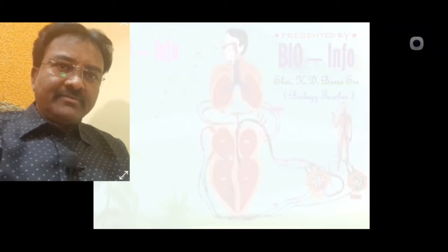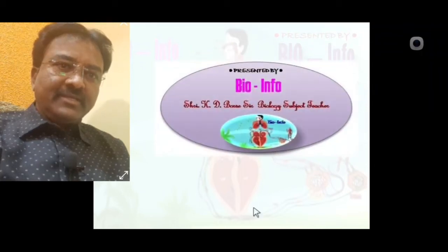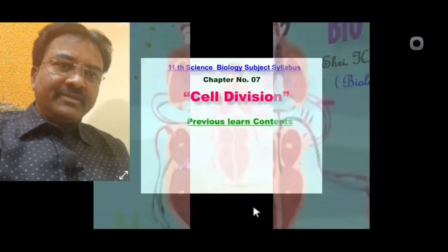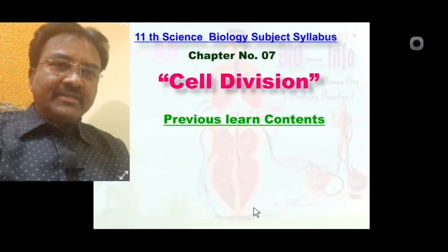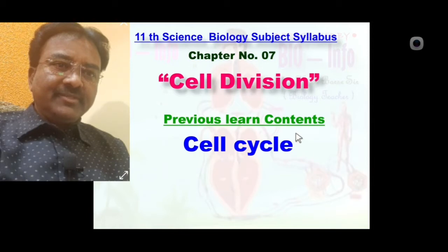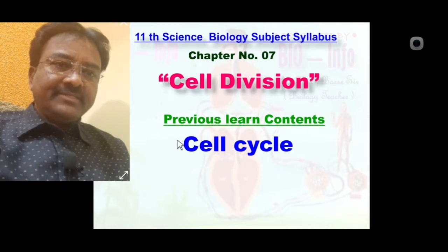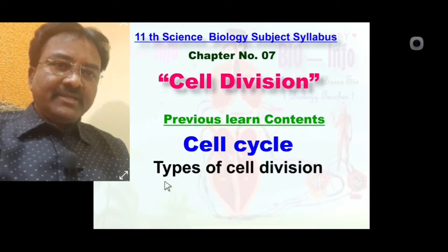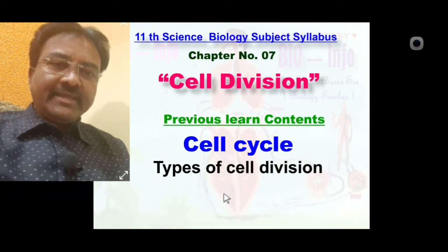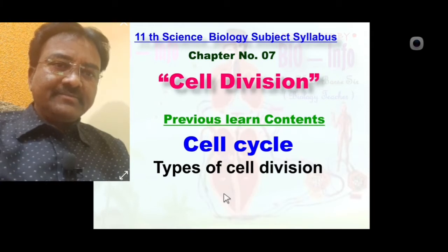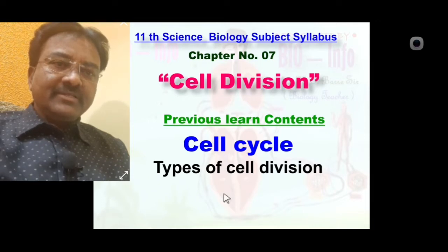Hello students, welcome back. I am Shri K.D. Burseser, biology subject teacher. In the previous lecture we learned cell division chapter content, the cell cycle. You know the cell cycle consists of two phases: interphase and mitotic phase. We also learned the types of cell divisions. There are three different types of cell divisions seen in animal cells: amitosis, mitosis, and meiosis. In the previous lecture we learned amitosis type of cell division.